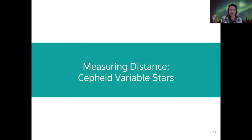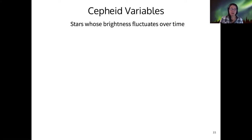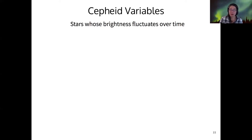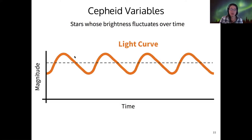Now I want to talk about how we measure distance using the method of Cepheid variable stars. Cepheid variable stars have a brightness that fluctuates over time. If we measure their brightness over a long period of time, then we get something called the light curve.